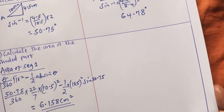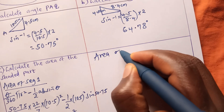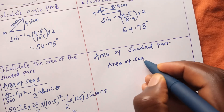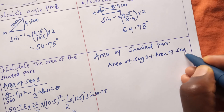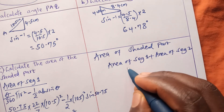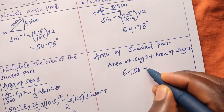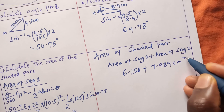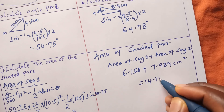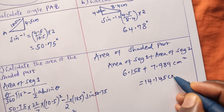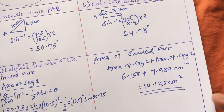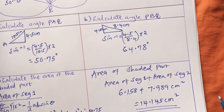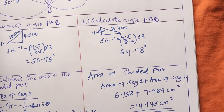Now we add the two areas: the area of the shaded part equals area of segment one plus area of segment two, which is 6.158 plus 7.989, giving us 14.145 square centimeters. If you are new to this channel, please subscribe and share this video and leave a comment. Thank you so much, see you in the next presentation.